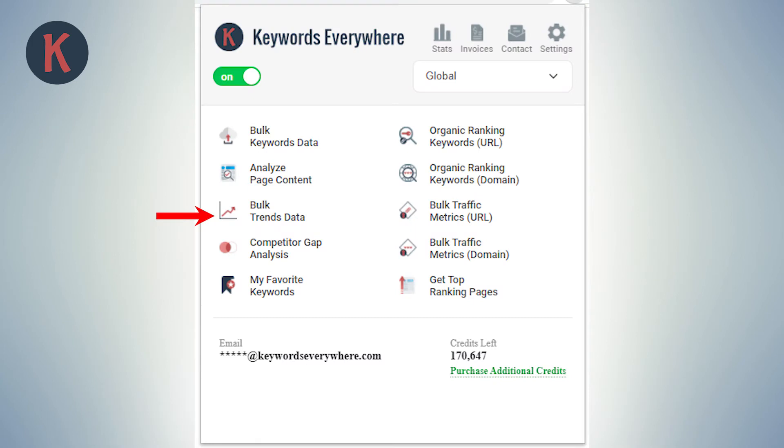We have another functionality with a similar name called Bulk Trends Data. You should use that functionality only when you want the historical search volume data from 2004 for keywords. That functionality uses the Google Trends API and is not as accurate for the 12-month trend data as this one is. It also takes a lot longer to process and it's limited to only 1,000 keywords at a time.